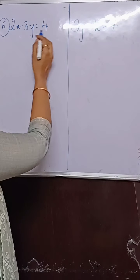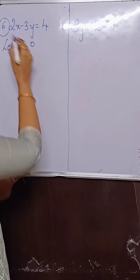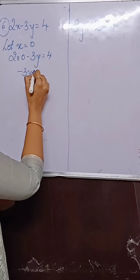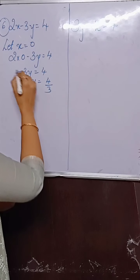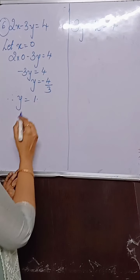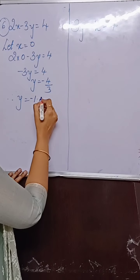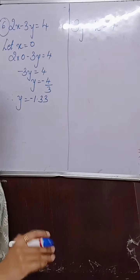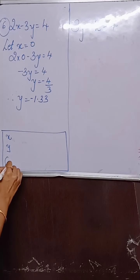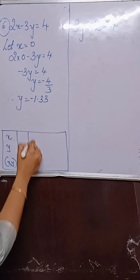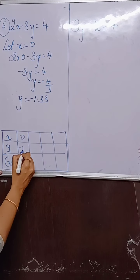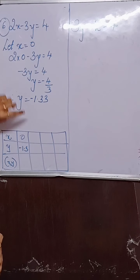First equation: 2x minus 3y is equal to 4. Let us take x as 0. So 2 into 0 minus 3y equals 4, giving minus 3y equals 4, so y equals 4 upon 3, which is approximately minus 1.3. When x is 0, y is minus 1.3.